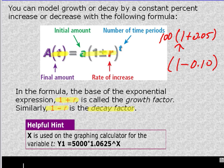And x is used on the graphing calculator for t. So we're going to be using the graphing calculator to solve some of these problems. You don't have a t for time. So you're just going to use the default variable on the calculator, which is going to be your x. And the carat sign is the same as exponent. This says 1.0625 to the x power.